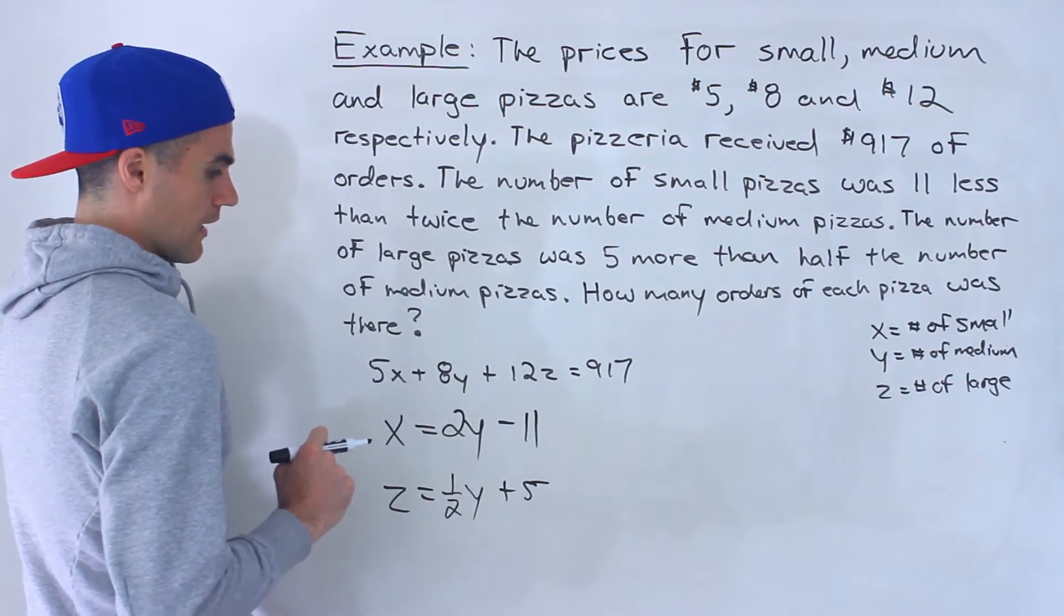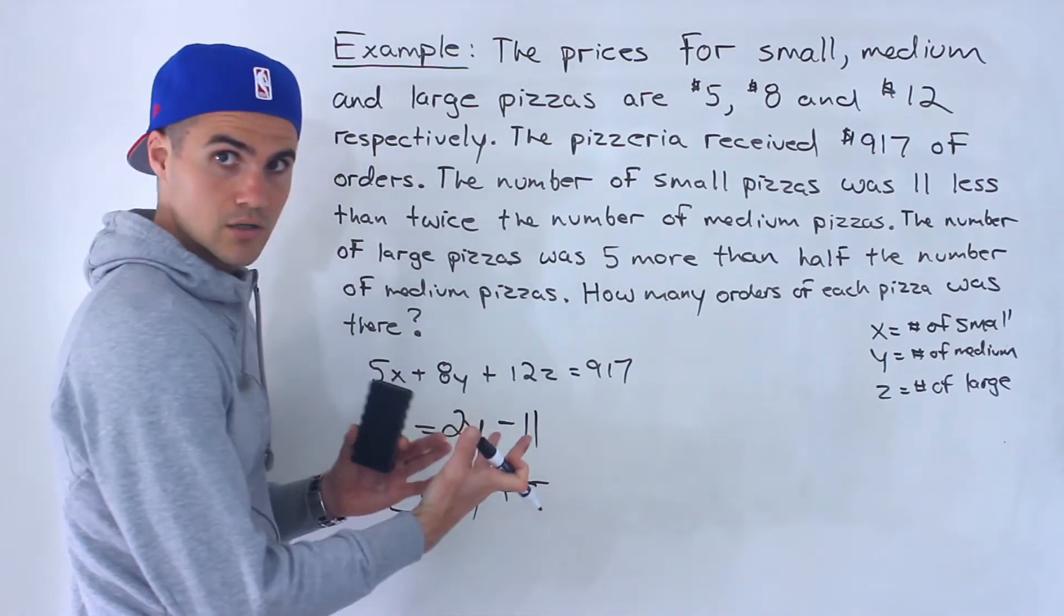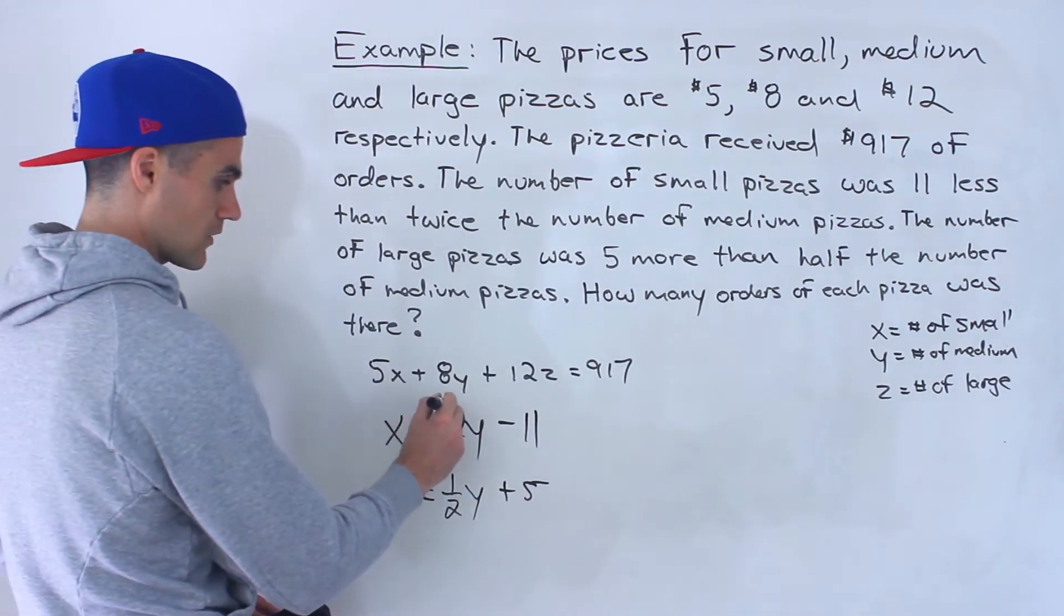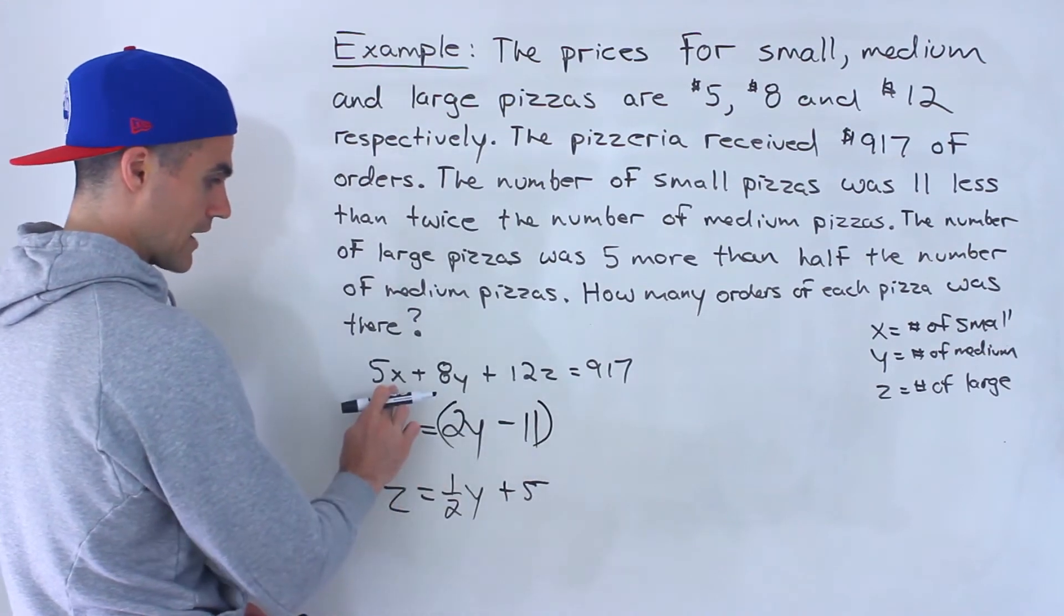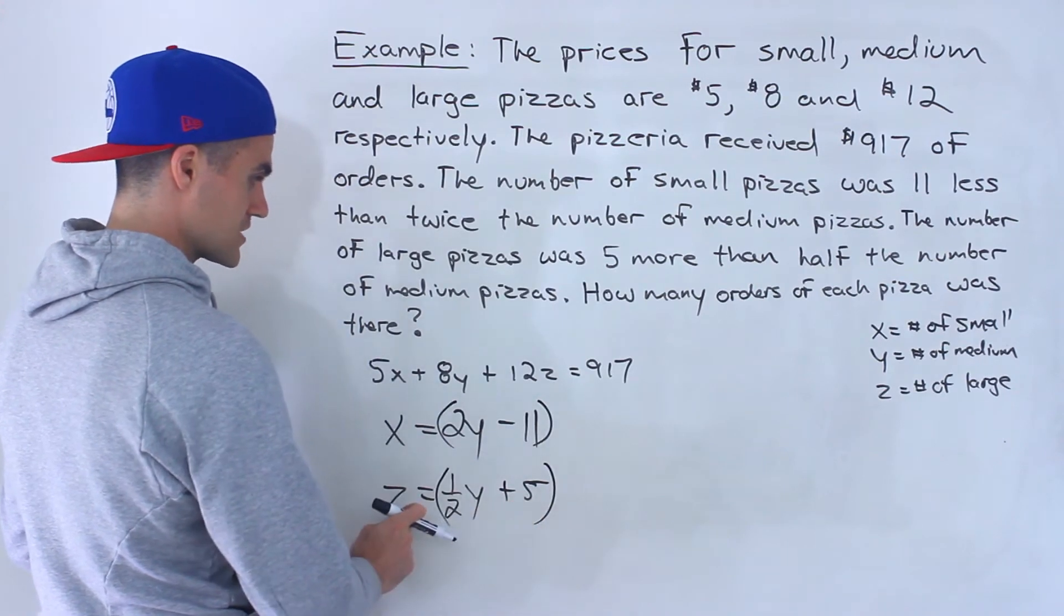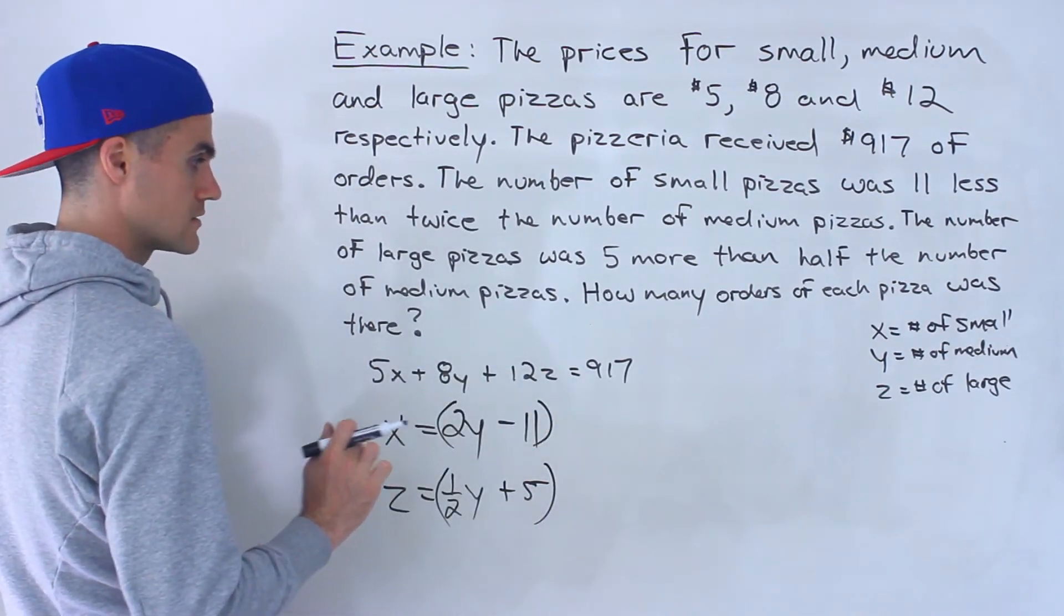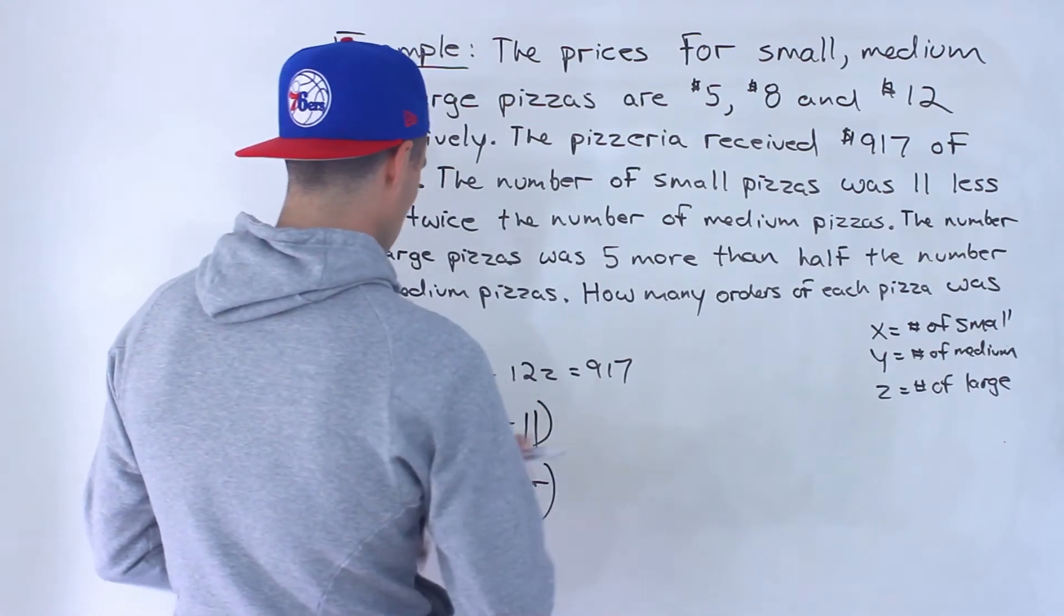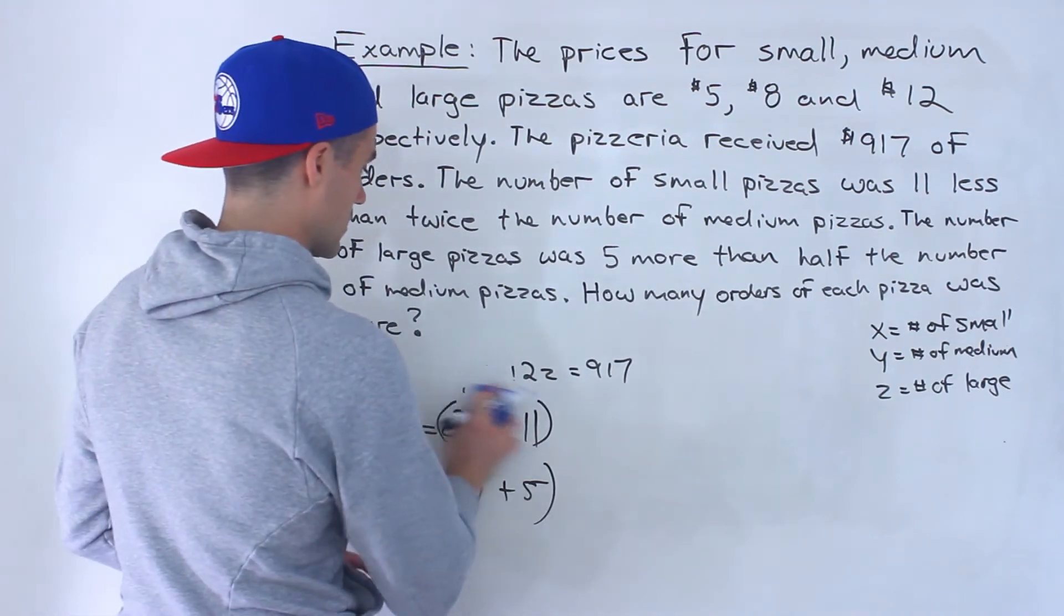And so now we can solve, we got three equations, three unknowns, and actually what we can do is we can take this expression, plug it in for x in this first equation, then we could take this expression for z, plug it in here, and then notice everything would be in terms of y. So what we can do is we can rewrite this, I'll rewrite it over here.